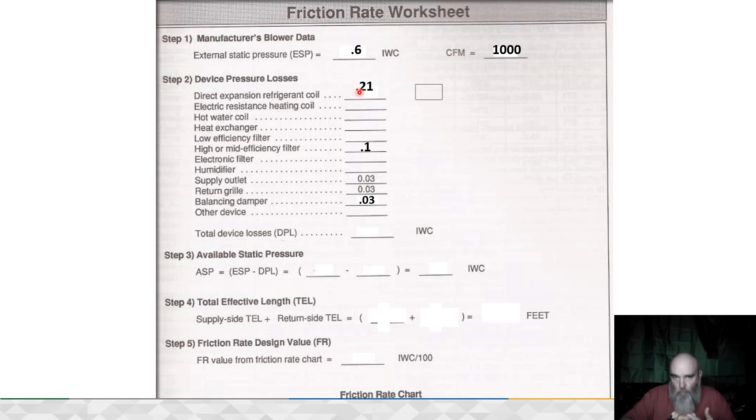The idea behind this is if we can design a duct system that can deliver the proper volume at an acceptable velocity to the worst case scenario, then we can get the proper amount of air at acceptable velocities to the rest of them. That's why there's only one register, one grill, one damper included in this worksheet—because we're solving this for the critical path.